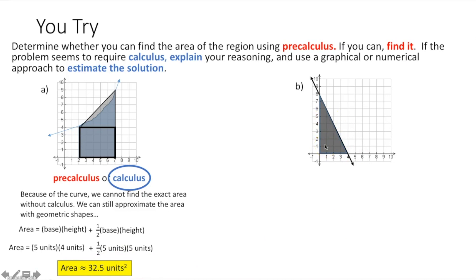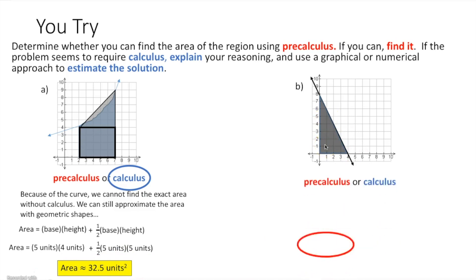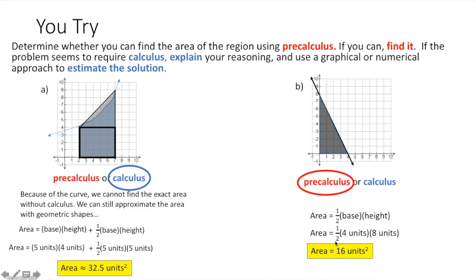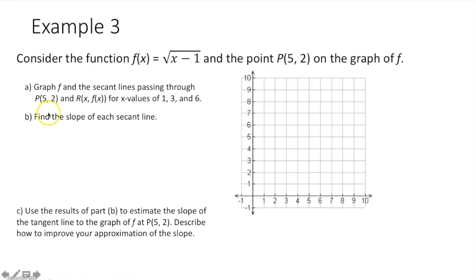Here we just have a triangle, which means I use the area formula ½×base×height, which we learned from geometry. I plug in the base of 4 units and the height of 8 units, multiply together and by a half, and end up getting 16 square units as the area under this curve.